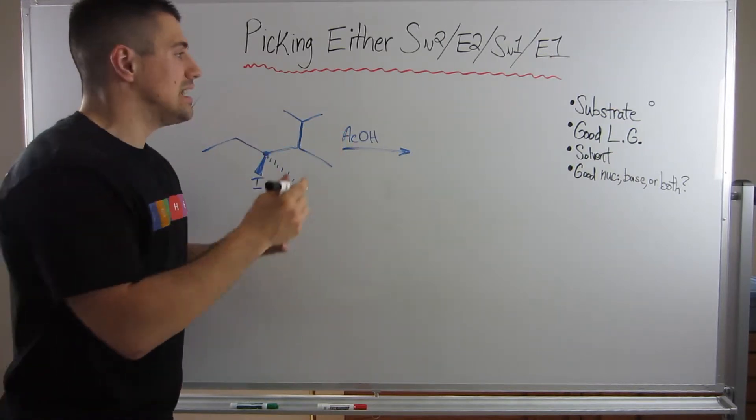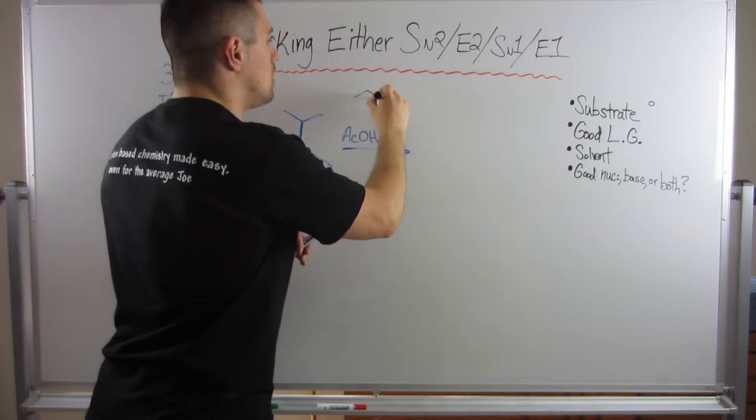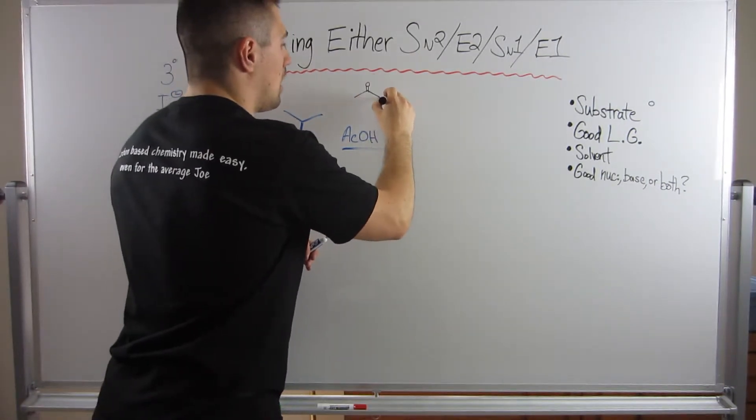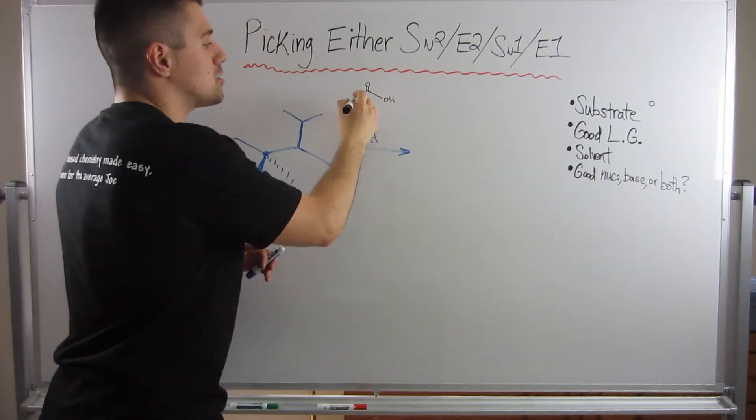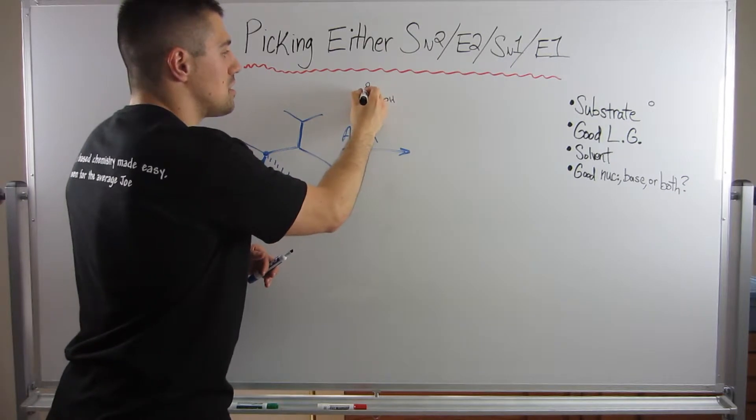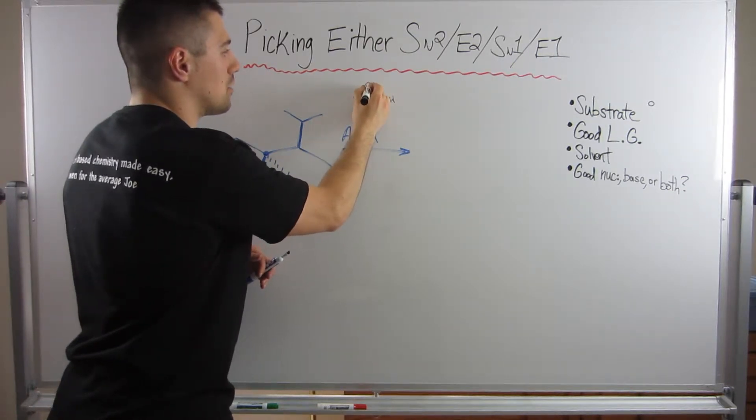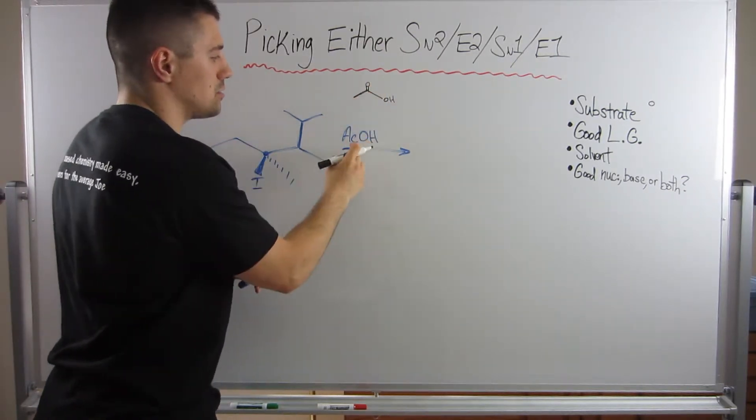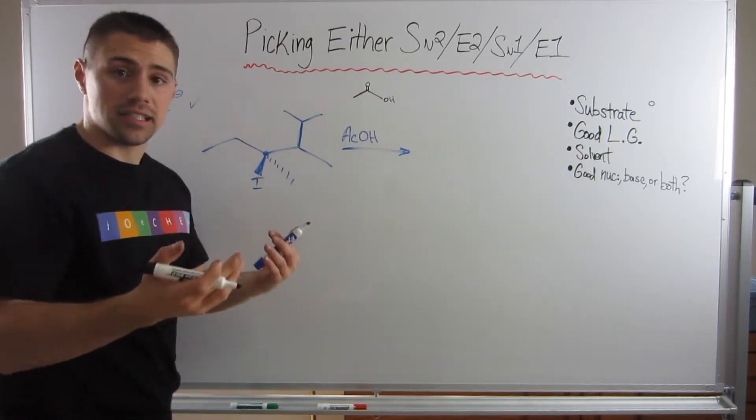And here's how I always think about it, right? Acetic acid is a two-carbon carboxylic acid, right? So anytime you see AC, it just means this piece right here with the carbonyl, and then whatever's attached to it. So this is actually acetic acid. The AC just stands for this part right here.